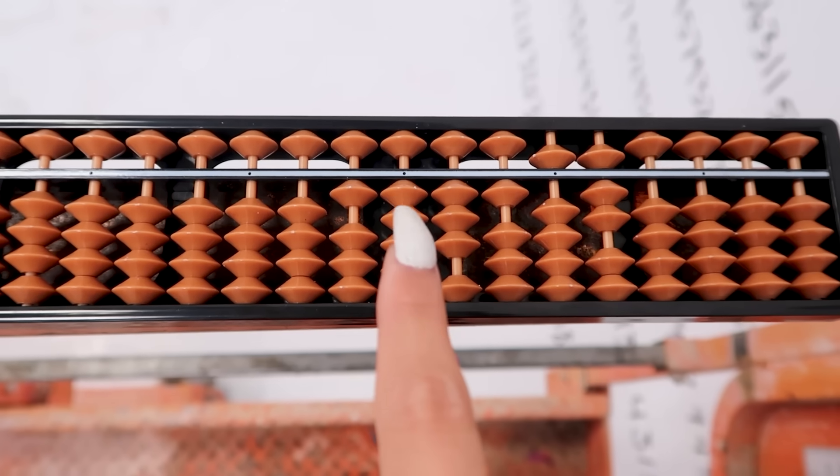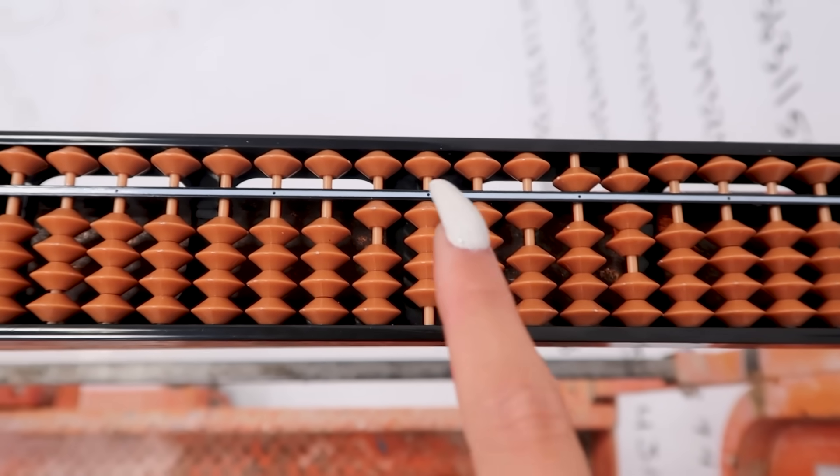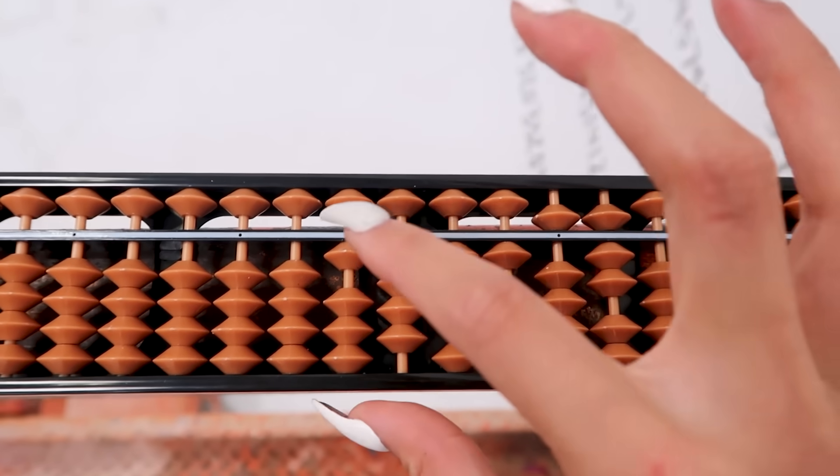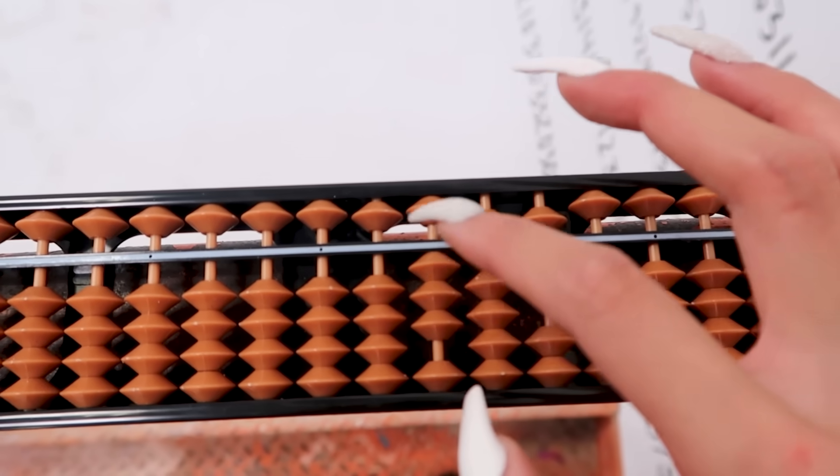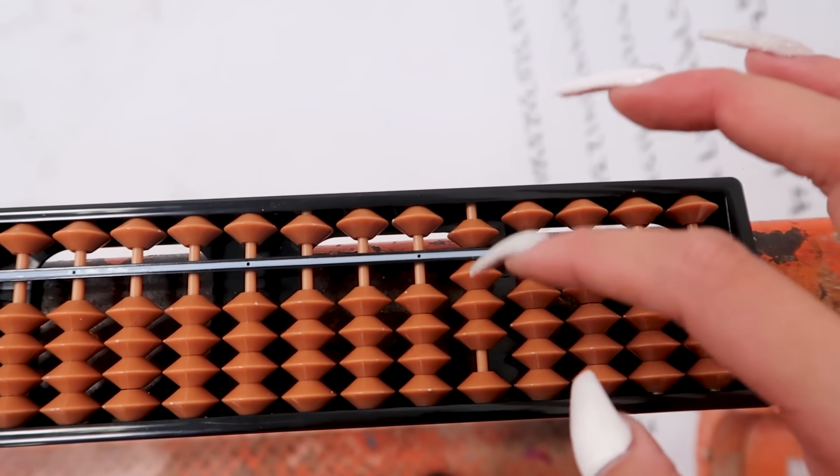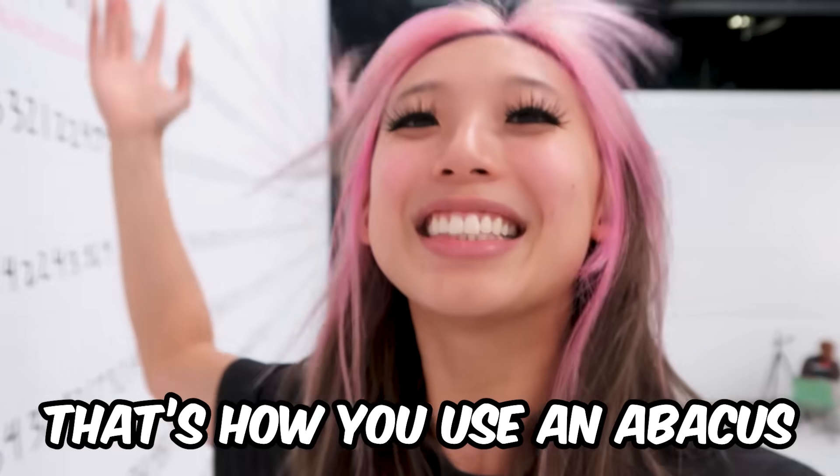If I want to divide by six, the only number divisible by 14 for six is two. So six times two is 12. Then three. Then eight. Then five. Then nine. And five. That's how you use an abacus.